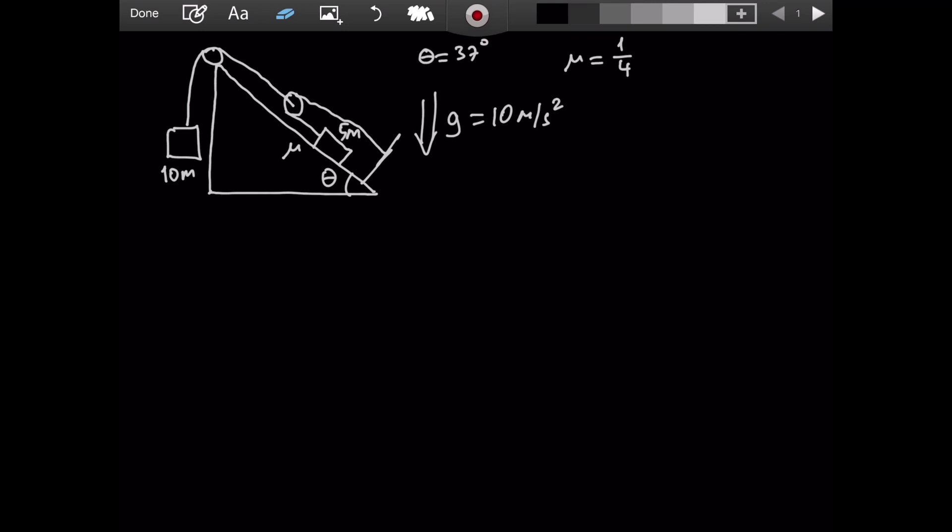Also, another simplification is that we can have this triangle. This is a 90 degrees angle. This is 37 degrees. The opposite is 3. This is 4 and this is 5. So what I'm saying is you can assume that sine 37 degrees is 3 over 5 and cosine 37 degrees is 4 over 5. This will help with the calculations. You don't need to assume this. But if you don't, you need a calculator, which we don't have.